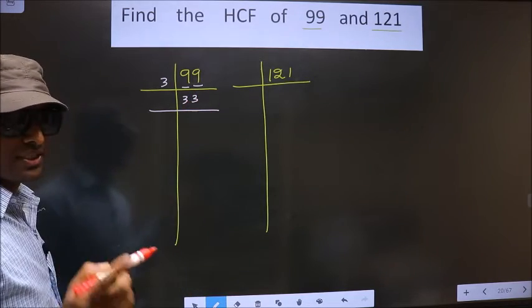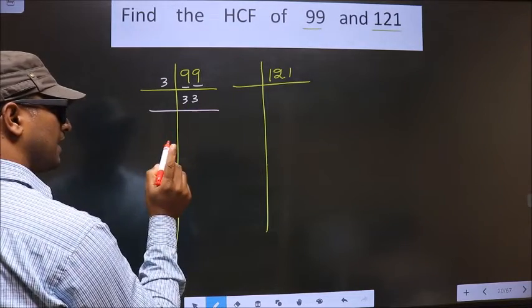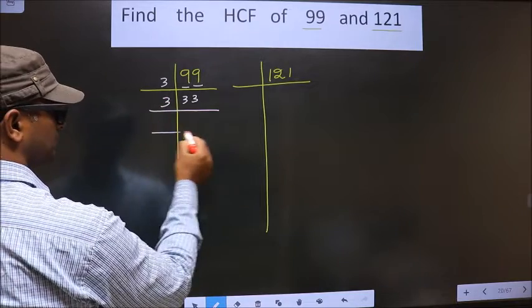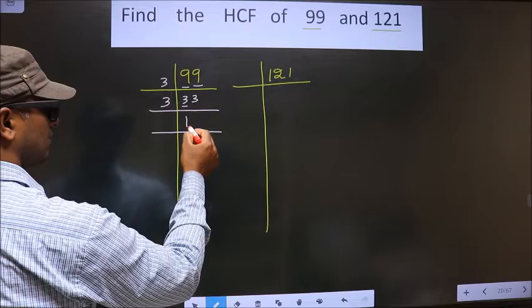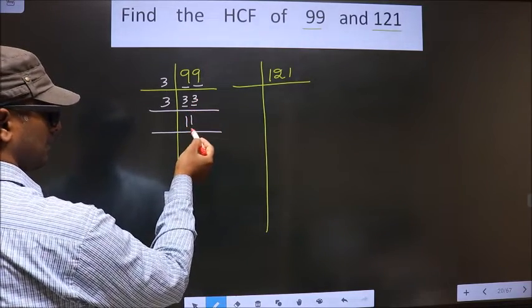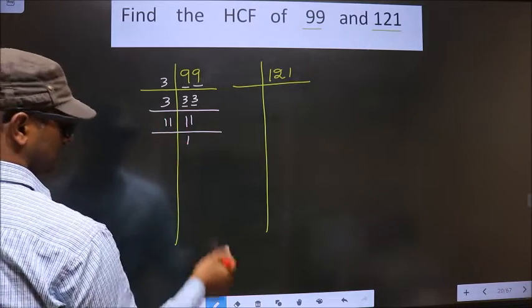Now observe, both are 3s and 3 is a prime number, so we take 3 here. First number is 3. When do we get 3 in the 3 table? 3 times 1 is 3. We have 3 again, so you write 1 again. Now here we got 11. 11 is a prime number, so we take 11 times 1 is 11.